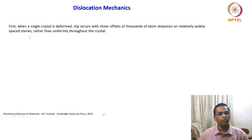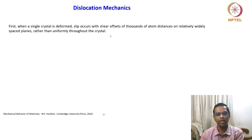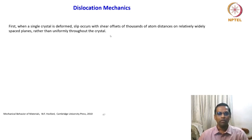What are the aspects we are going to see now? First, when a single crystal is deformed, slip occurs with shear offsets of thousands of atom distances on relatively widely spaced planes, rather than uniformly throughout the crystal. When I started this chapter, I mentioned that we are looking at dislocations because the theory of elasticity deals with most of the calculations of energy and the stress field equations. Now we are concentrating on mechanics, and I want to complete some introduction on dislocation motion and mechanics.